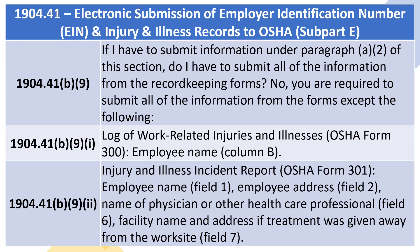1904.41(b)(9): If I have to submit information under Paragraph A.2 of this section, do I have to submit all of the information from the recordkeeping forms? No, you are required to submit all of the information from the forms except the following: from the Log of Work-Related Injuries and Illnesses, OSHA Form 300 — Employee Name, Column B; and from the Injury and Illness Incident Report, OSHA Form 301 — Employee Name (Field 1), Employee Address (Field 2), Name of Physician or Other Health Care Professional (Field 6), and Facility Name and Address if Treatment Was Given Away From the Worksite (Field 7).